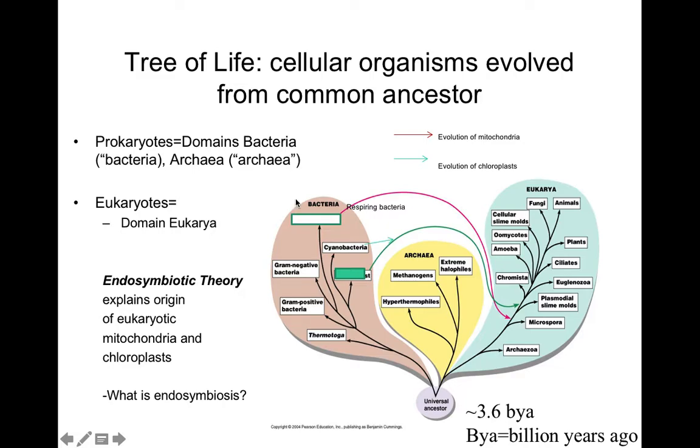Two of the domains contain prokaryotes, domain bacteria and domain archaea, and the other domain contains the eukaryotes. According to the endosymbiotic theory, eukaryotic mitochondria evolved from primitive aerobic respiring bacteria, and eukaryotic chloroplasts evolved from primitive endosymbiotic cyanobacteria. The structures of the mitochondria and chloroplasts support this hypothesis.